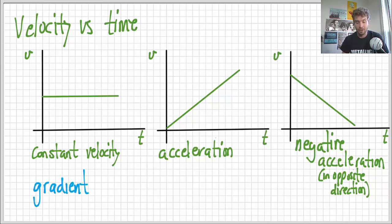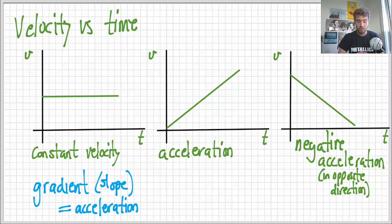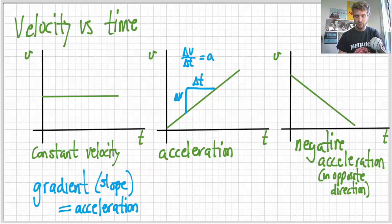Now, there's lots of little, with these velocity versus time graphs, there's lots of little calculations we can do. So, this time, the gradient or slope equals the acceleration. So, the delta V over delta T, the change in velocity over the change in time, if we divide that, if you think about that, velocity divided by time, that's acceleration. It makes a lot of sense. That equals A for acceleration.